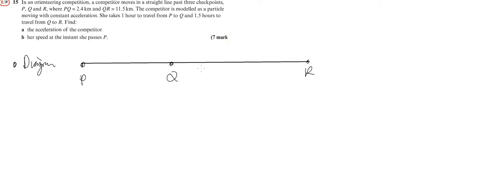P to Q is 2.4 kilometers, Q to R is 5 kilometers. It takes one and a half hours to get from P to Q and one and a half hours to get from Q to R.